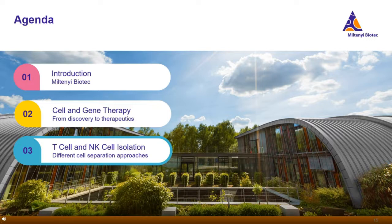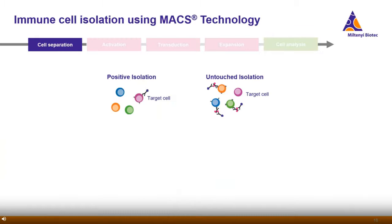I'm Julia — warm welcome from my side. I'm going to take over the next part. Let's start with the first step of the workflow, which is the enrichment of T cells or NK cells from blood products. Looking at T and NK cell isolation in more detail, you can either isolate them by positive isolation — meaning that the T or NK cells are magnetically enriched with either CD4 and CD8 microbeads or with CD56 microbeads — or T or NK cells can be isolated in an untouched manner, meaning that all other cells are labeled with microbeads and depleted.